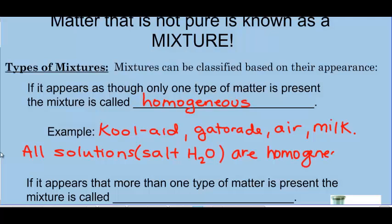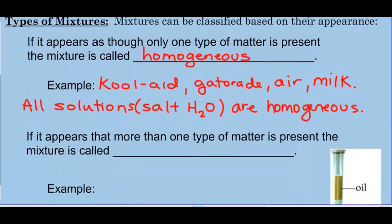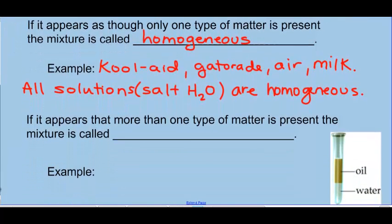In other words, in a homogeneous mixture, you can't see the parts. Even though there are parts, they cannot be seen. They're either too small to be seen, like in a solution, or they blend. If you can look at the mixture and see visible parts, then the mixture is called heterogeneous. Remember, hetero means different. If you are a heterosexual, you prefer someone of the opposite sex. So heterogeneous means there's more than one type of matter present.